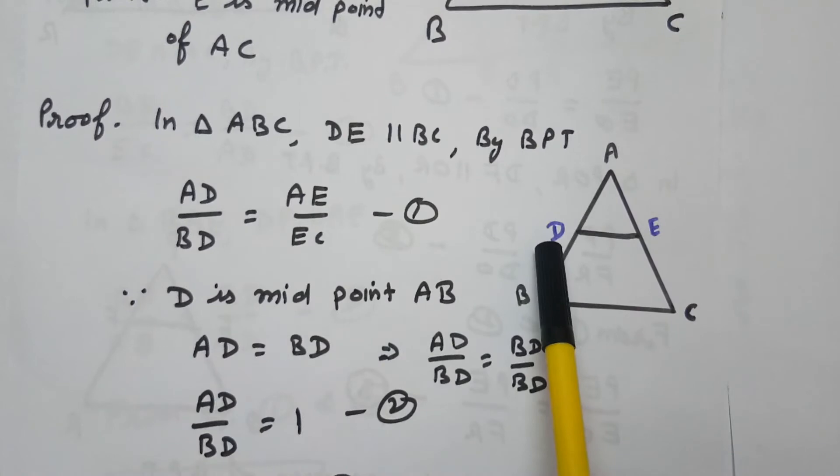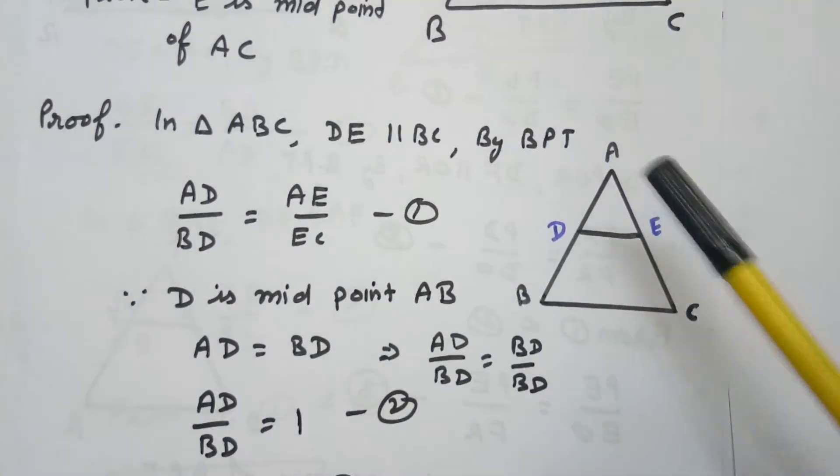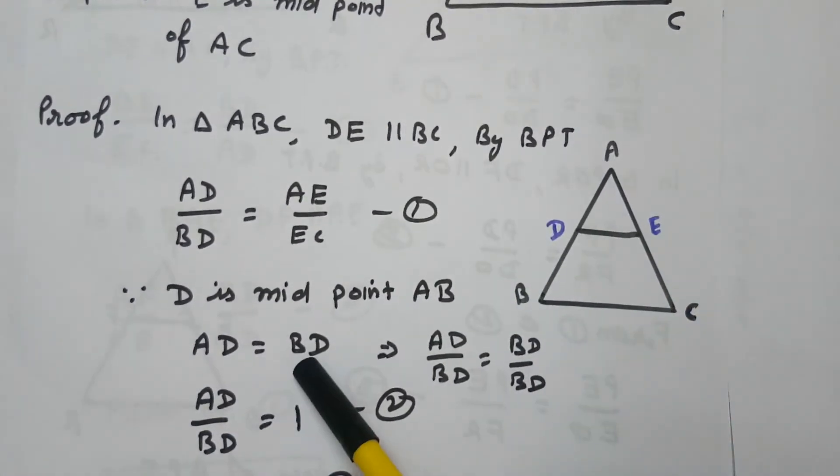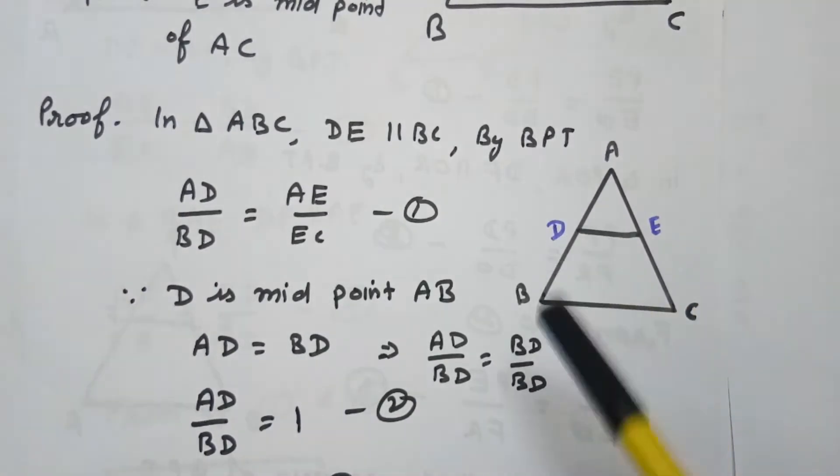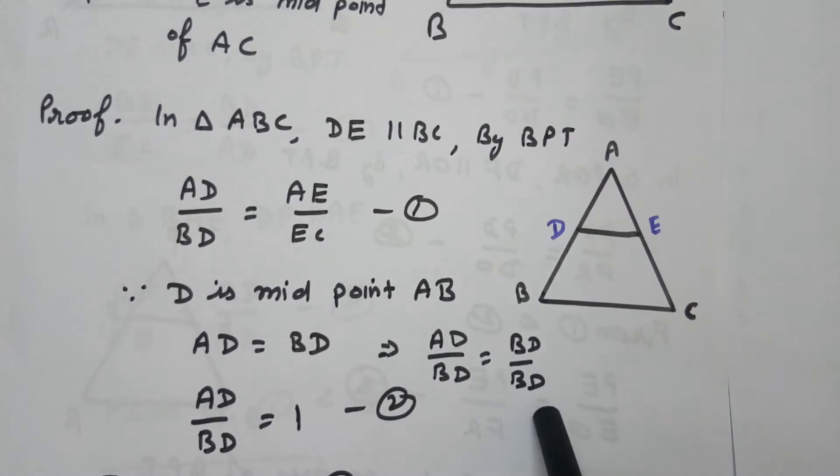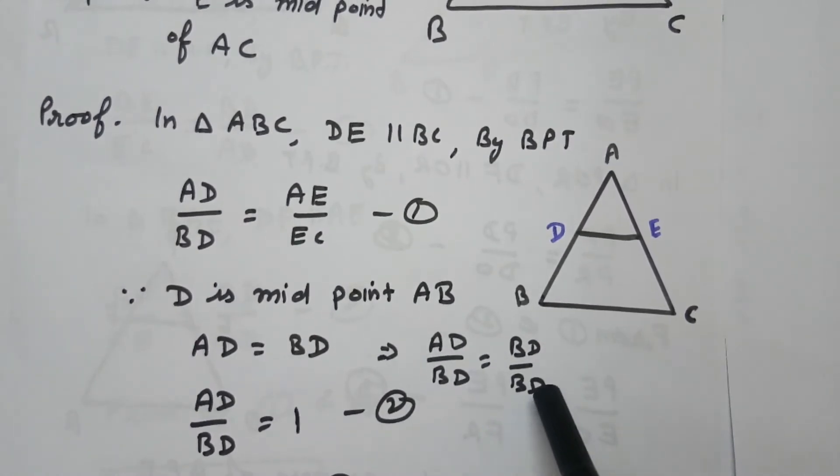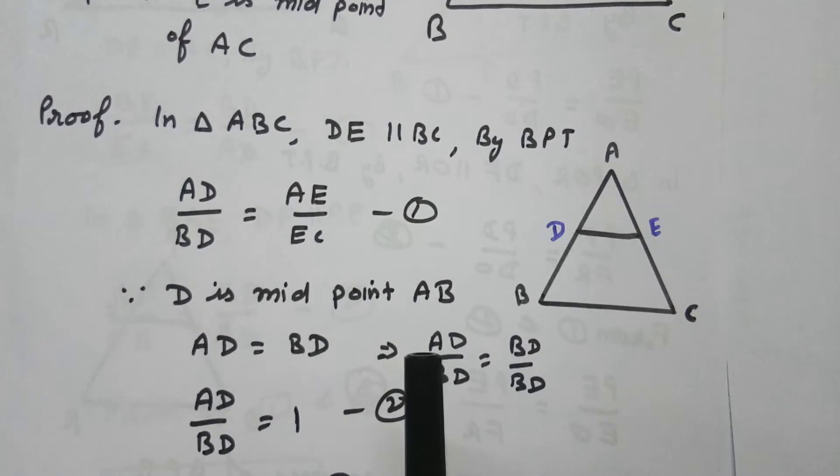So it means AD equals to BD because D is the midpoint. Dividing both sides by BD, AD over BD equals to BD over BD, so it becomes AD over BD equals to 1.